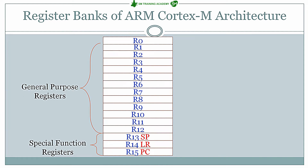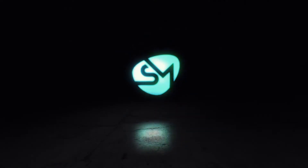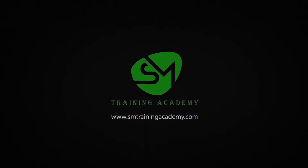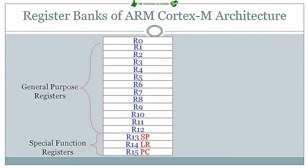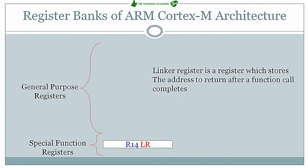In this video we are going to study and experiment the functionality of the link register in the ARM Cortex-CM processor. Register number 14 in the register set of the ARM Cortex-CM processor is the LR register. This R14 is the link register, which stores the address to return to after a function call completes inside the ARM Cortex-CM processor.